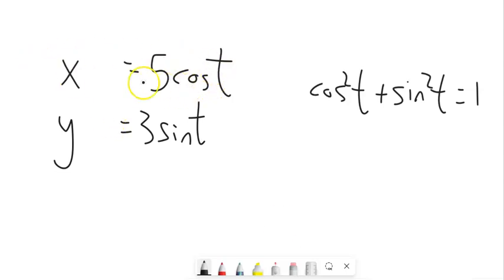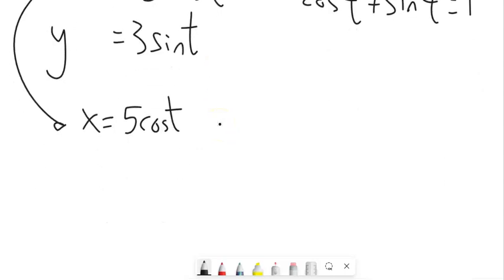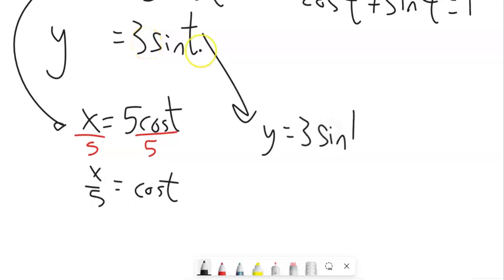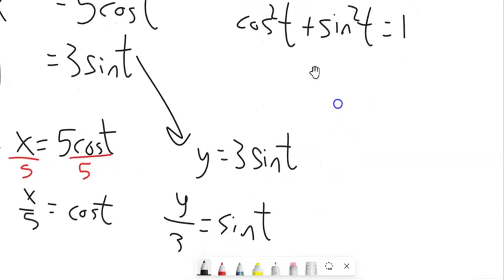So if I can write this in terms of cosine squared, it can take the place of that. Or just in terms of cosine, it can be that squared. And if I can write this in terms of sine, take the place of that. So as I look at this one, how about I just divide both sides by 5? So cosine is x over 5. And if I look at this one, same idea, right? I want to get sine all alone, divide by 3. So y divided by 3 is sine.